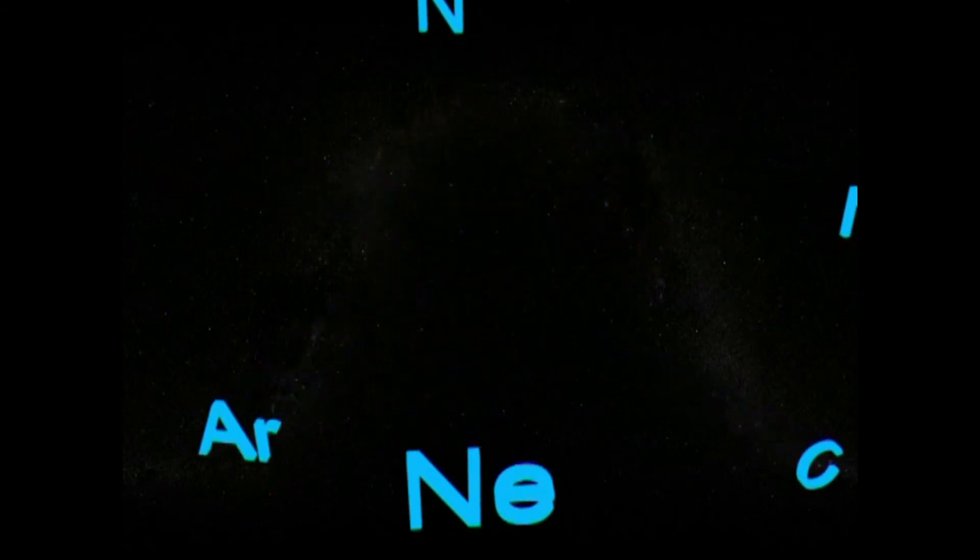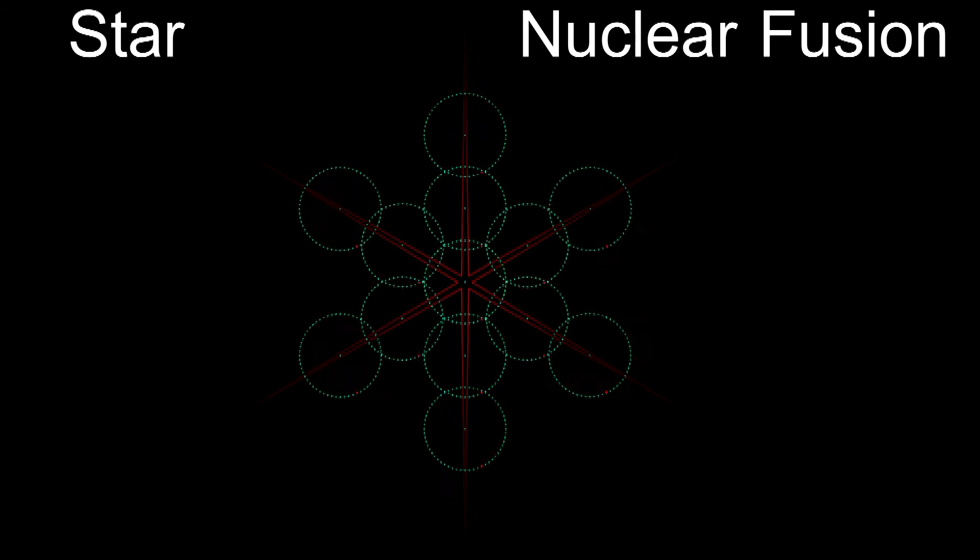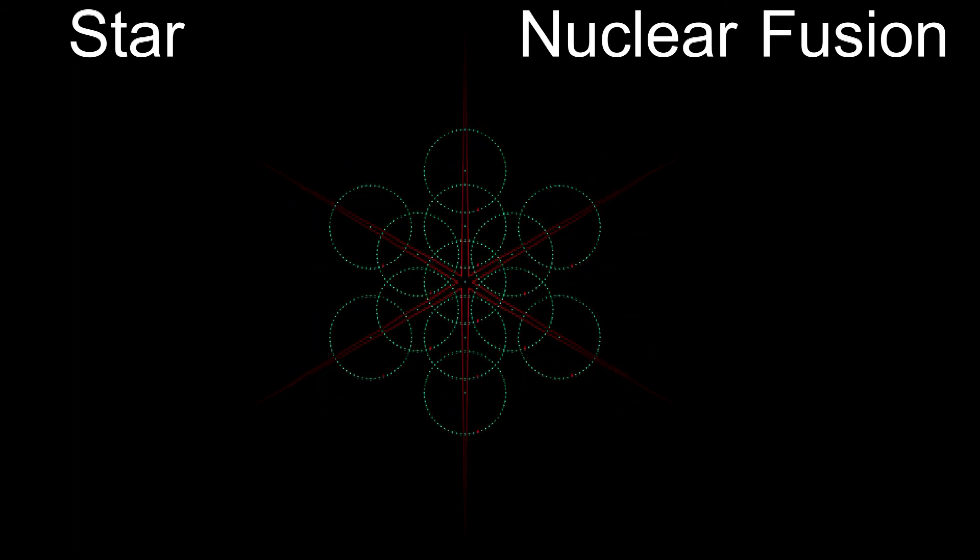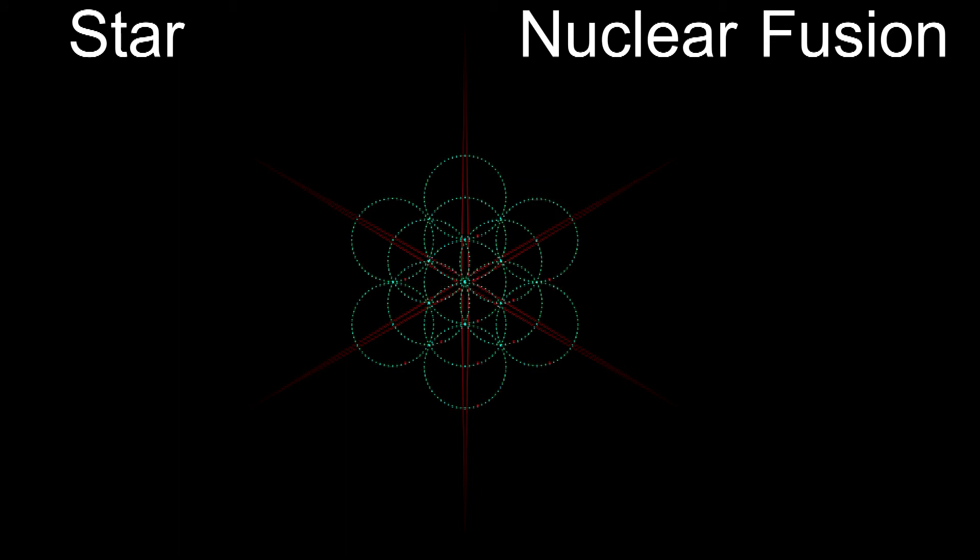So inside a star, these simple building blocks of hydrogen and helium are fused together to form the heavier elements. When the star explodes in a supernova, those elements are scattered into the universe.